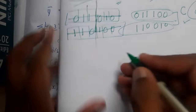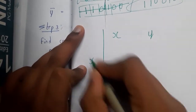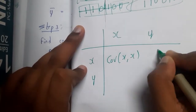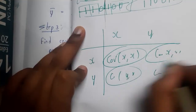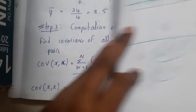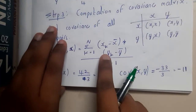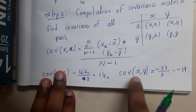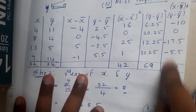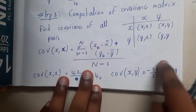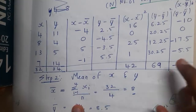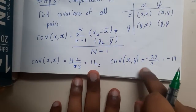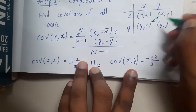You need to form a covariance matrix. For X and Y it looks like: covariance(X,X), covariance(X,Y), covariance(Y,X), covariance(Y,Y). You need to find these four values. Since covariance(X,Y) and covariance(Y,X) are the same, the sum for covariance(X,X) is directly 42 divided by N minus 1 which is 3. Similarly, covariance(X,Y) is minus 33 by 3, which equals minus 11.